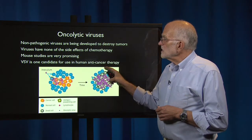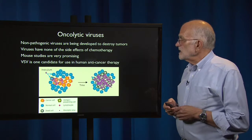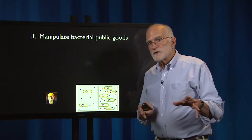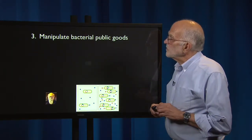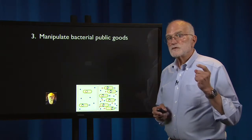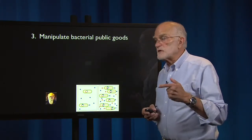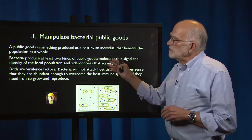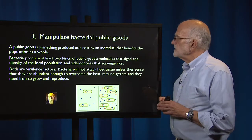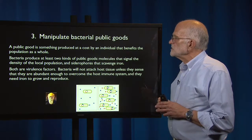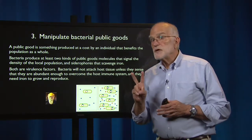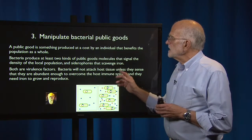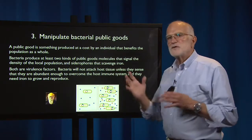VSV is one candidate for use in human anti-cancer therapy. Back to bacteria: the third strategy for controlling bacterial infections without producing an evolutionary response is to manipulate bacterial public goods. A public good is something produced at a cost by an individual that benefits the population as a whole. Bacteria produce at least two kinds of public goods: molecules that signal the density of the local population, and siderophores that scavenge iron from the medium.